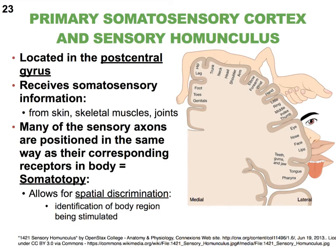Spatial discrimination refers to how well you can detect or differentiate between two points of stimulation. The word somatotopy will keep popping up — not just in the brain, but even in the spinal cord. A simple way of explaining it is that the brain is laid out logically compared to how our body is arranged: neurons bringing information from the feet won't sit next to those from the lips.